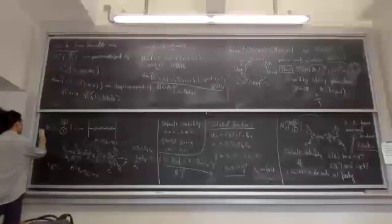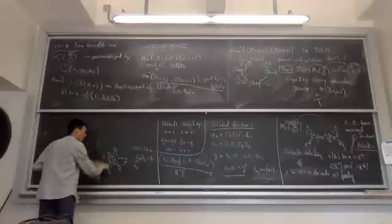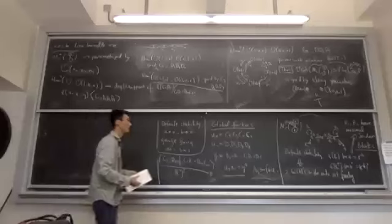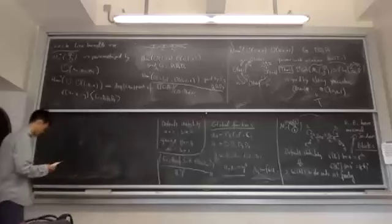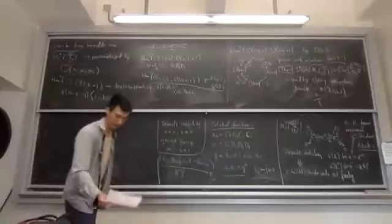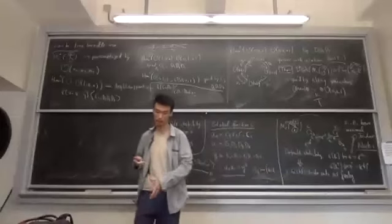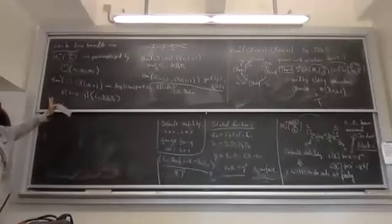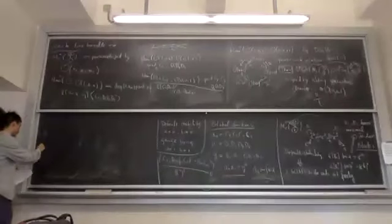This ends the first basic review of bow varieties. The case of general quiver(k,N) I will leave until after the next section. The main player of today is not quite the Coulomb branch of quiver(k,N) — that's a precursor. What I actually want to do today is to consider a slight generalization of this bow variety picture: a partial 3d N=2 extension of the bow variety.